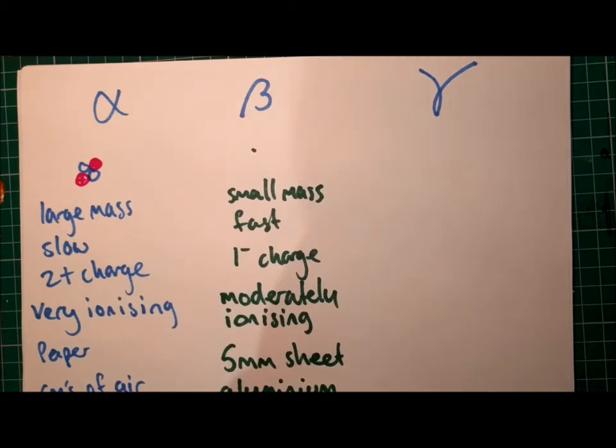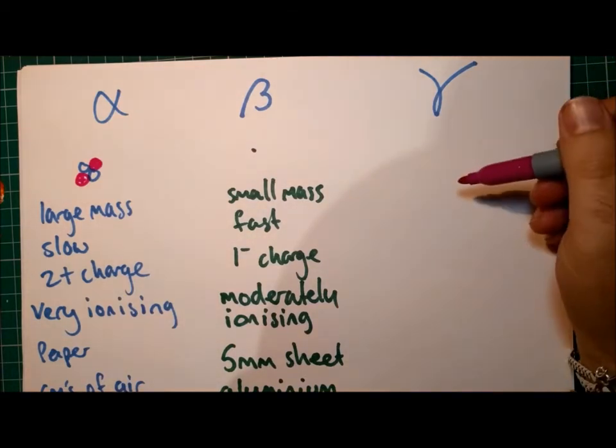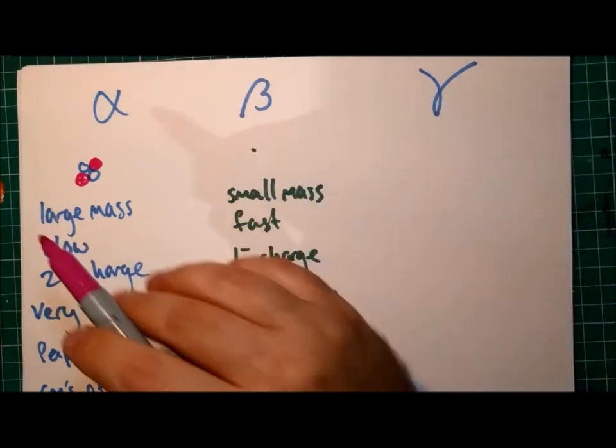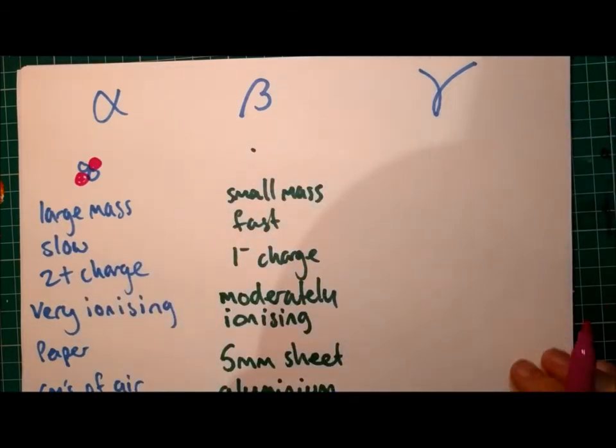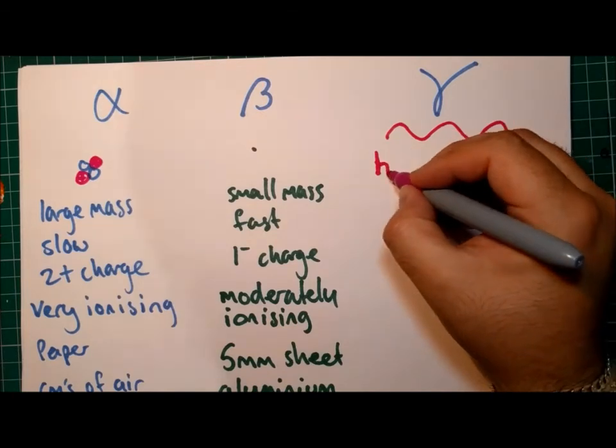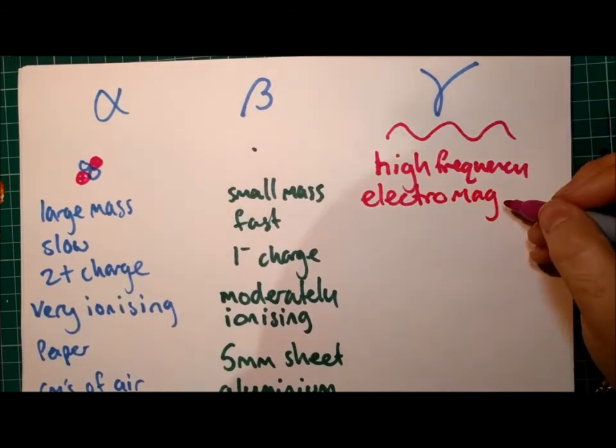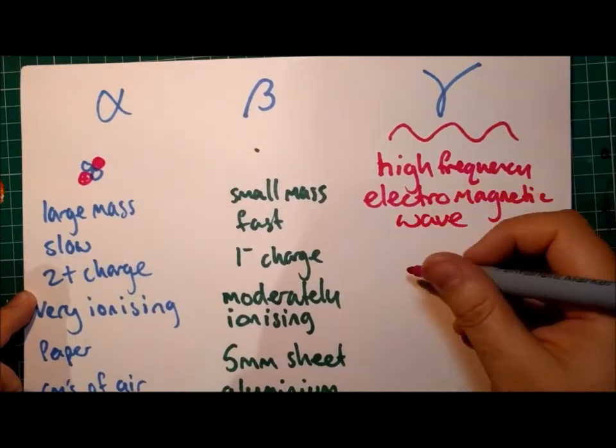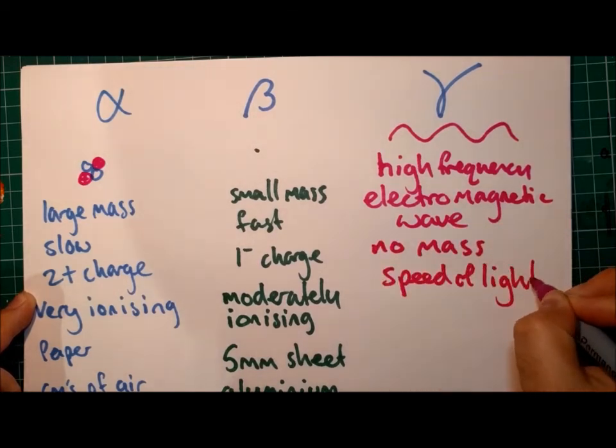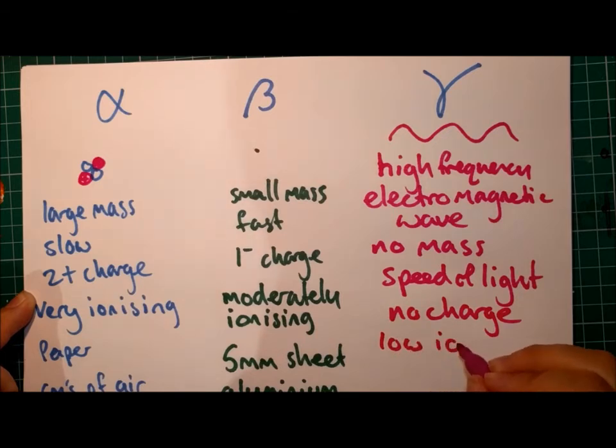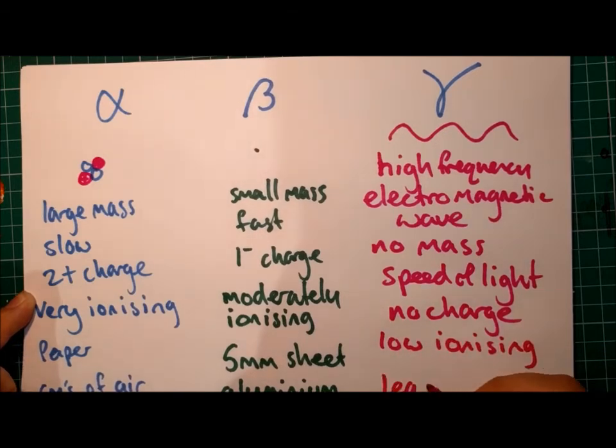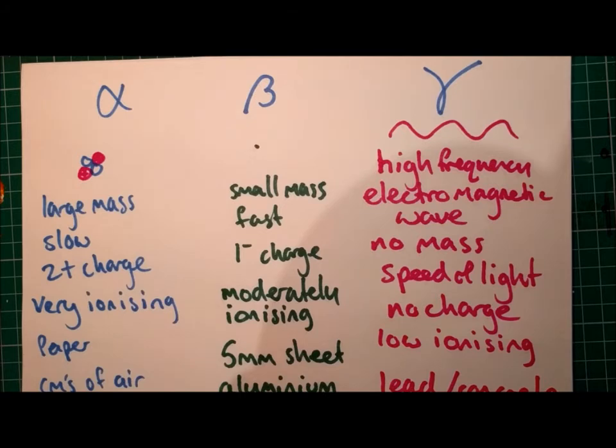The third and final form of radiation are gamma rays. Now the other two are both particles, but gamma rays are a form of wave. Gamma rays are a form of high-frequency electromagnetic wave. Because they're not a particle, they have no mass.